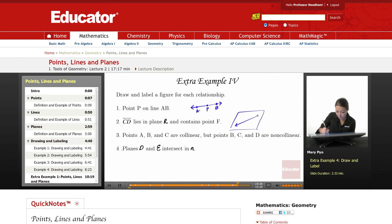Line CD lies in plane R. So this is plane R, and contains point F. So the line contains point F.